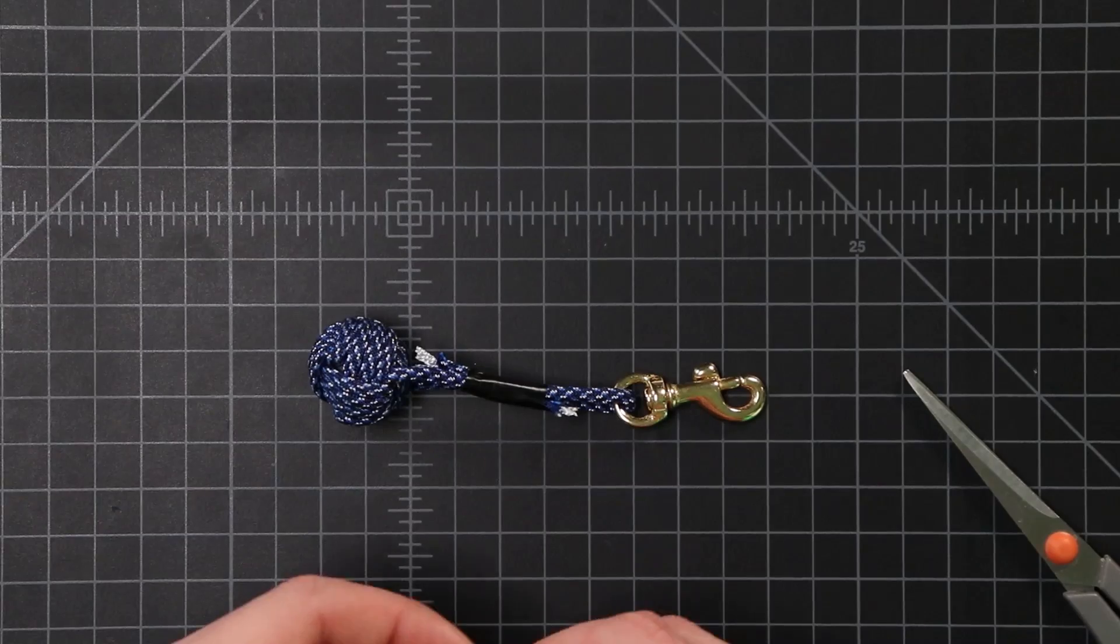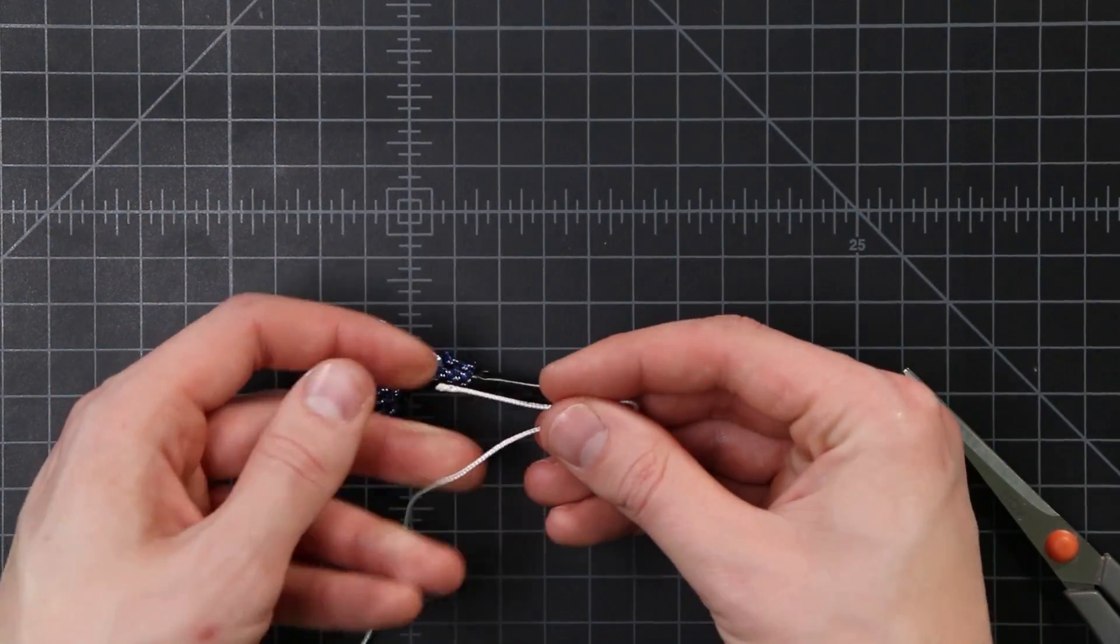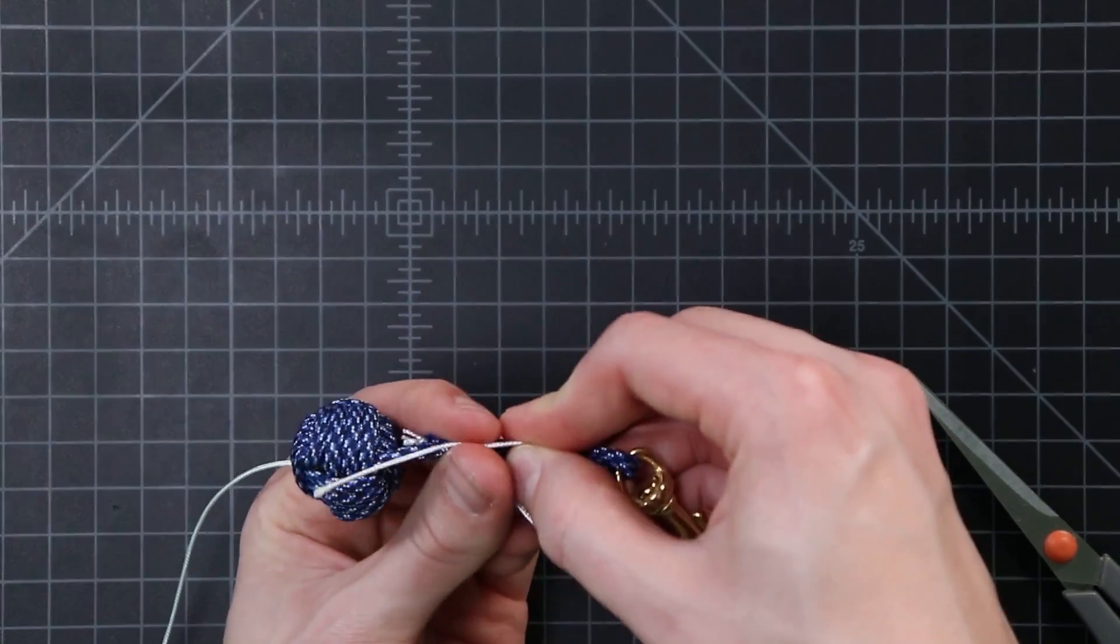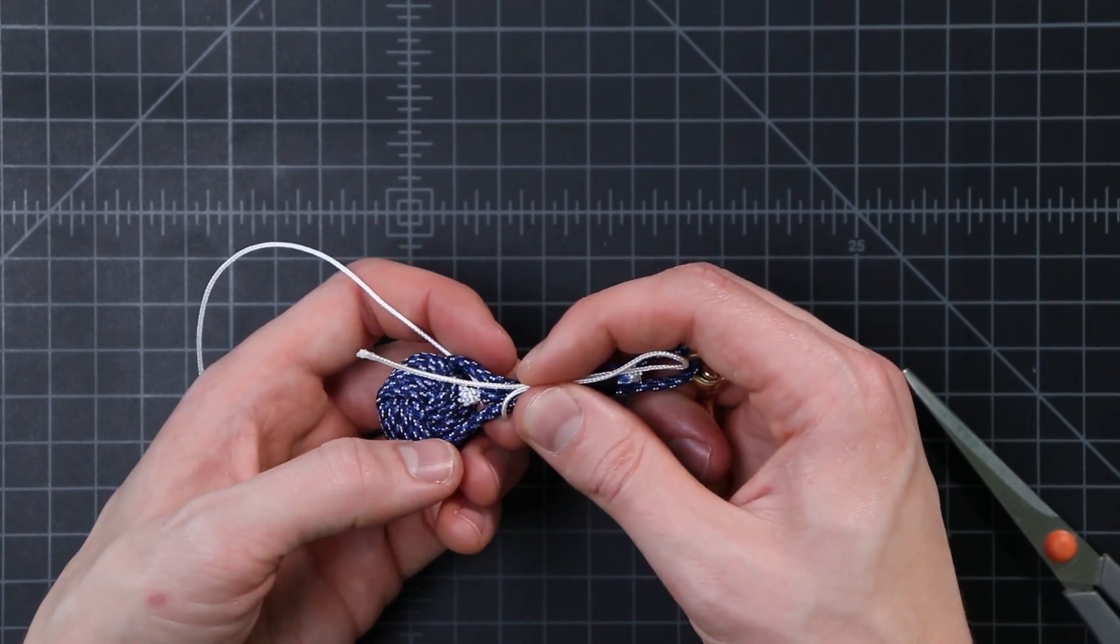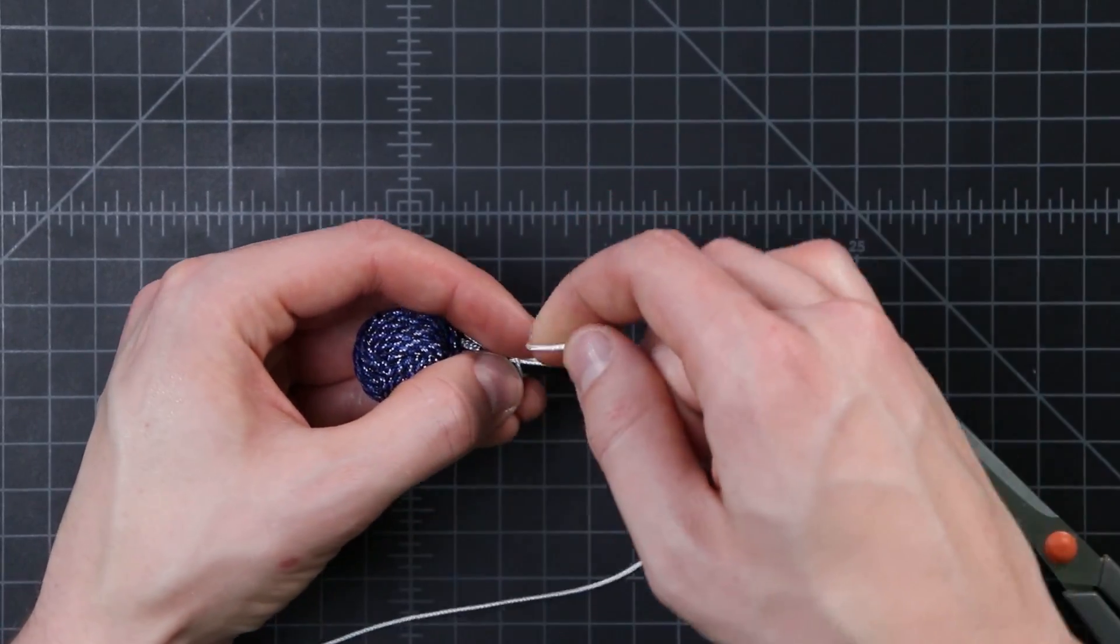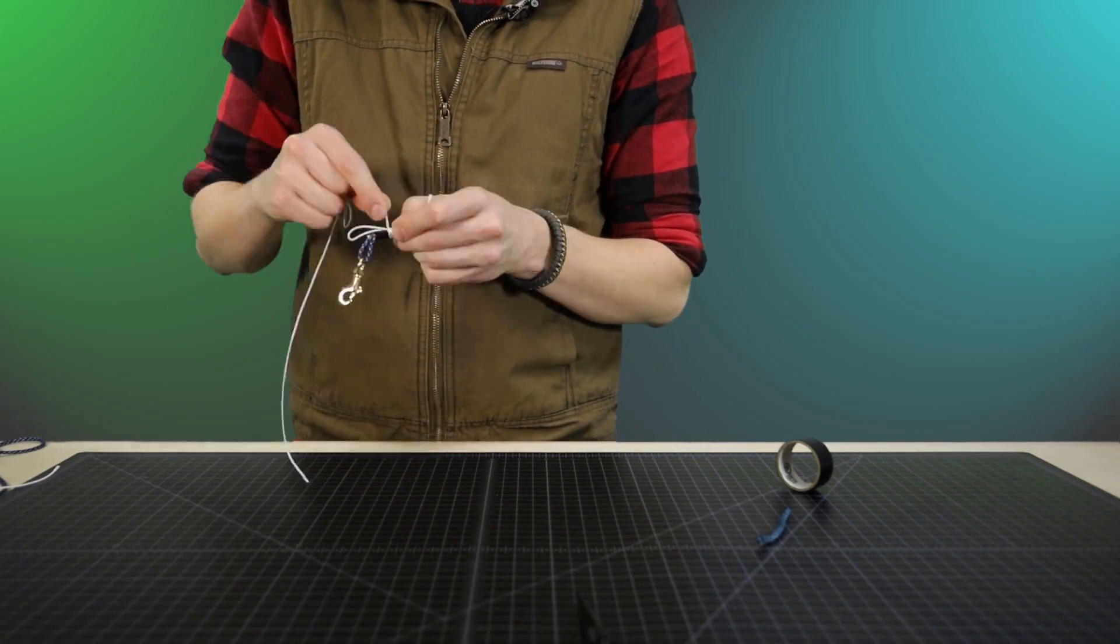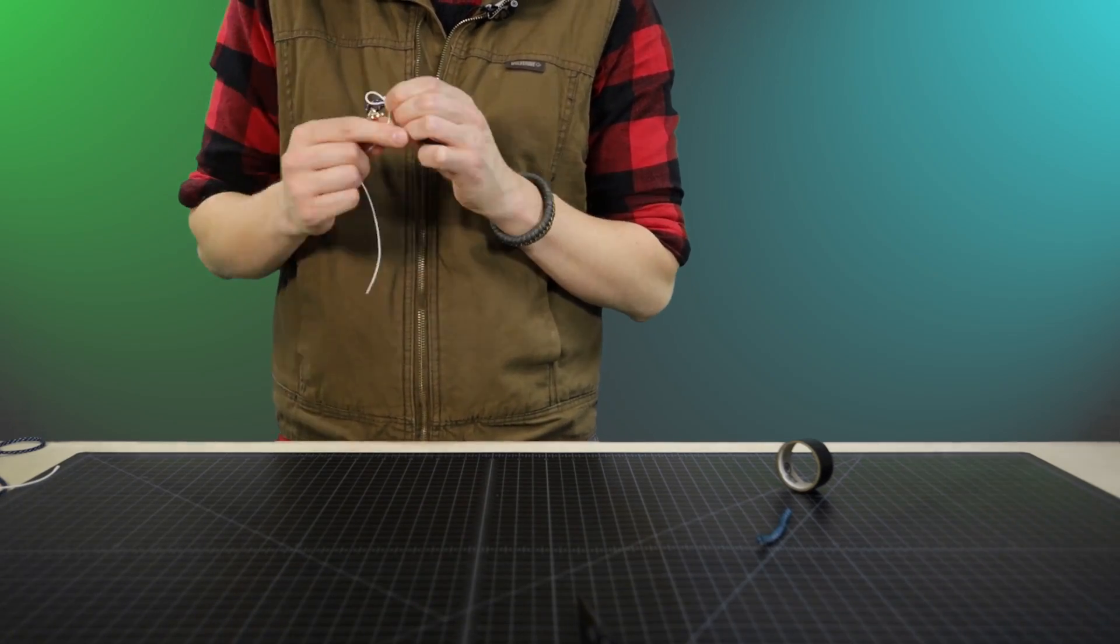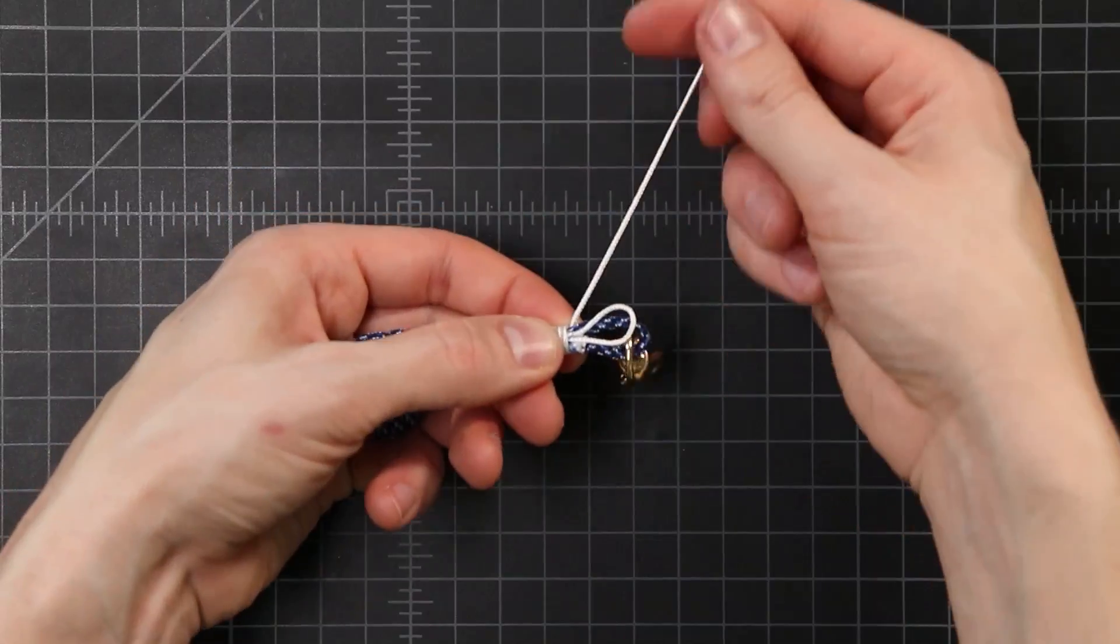We're going to cut three feet of our micro cord. All right. Now we're going to be using a simple whipping. So we'll lay our cord across. Leave a loop on one side and bring it back. We'll leave a long enough tail to pull on that end. And a long enough loop that it's going to stick outside of our wrap. We want to go past our tape so we don't see any of the tape in our final product. Then we're going to start wrapping it back on itself going the other direction. Once you get it started, it's a lot easier to keep going.